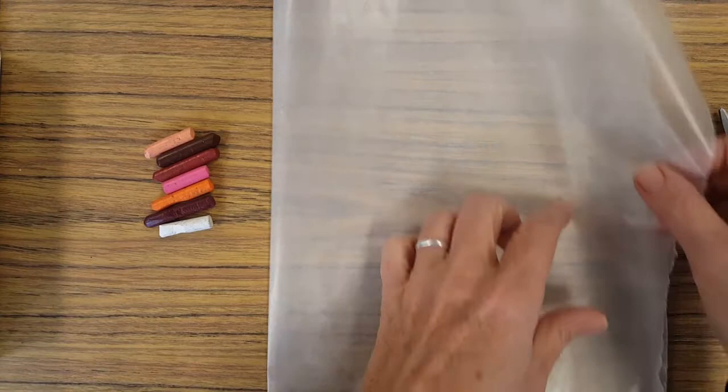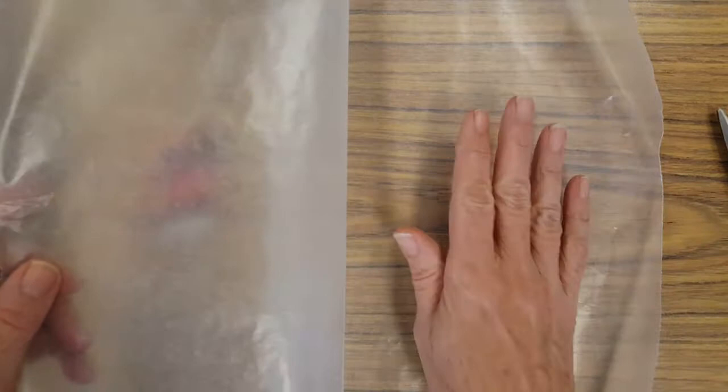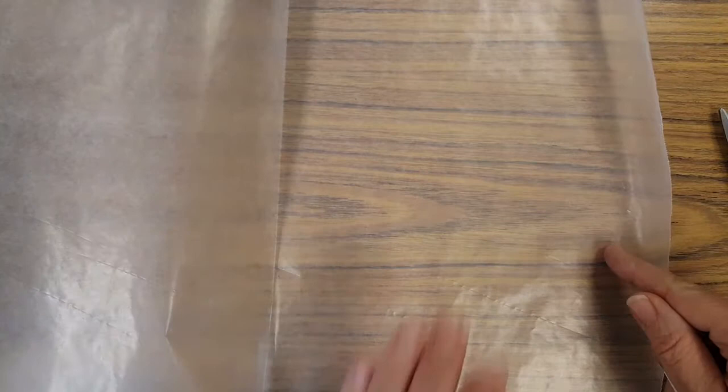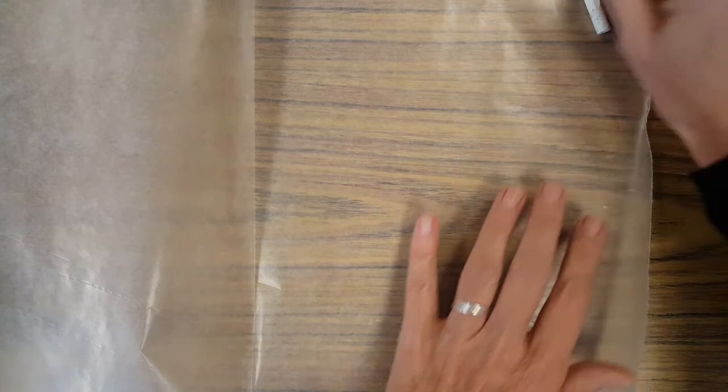I also have some crayons that have the paper peeled off and that's important too. My wax paper is folded in half and I'm going to work on just one side of my wax paper. So it's folded kind of like a book. It's about the size of a piece of notebook paper and I'm going to open it up and work on the inside just on one side. I'll put my crayons there to hold that corner down.